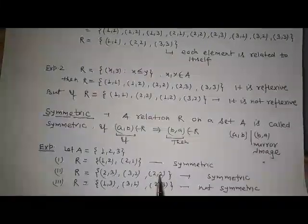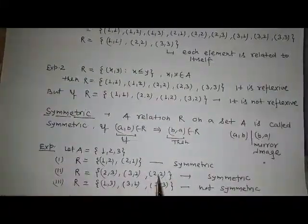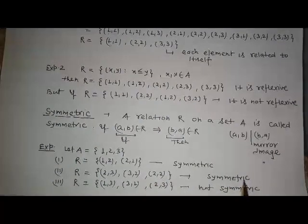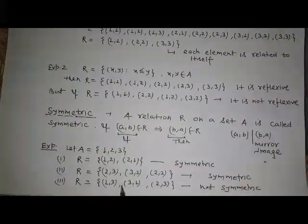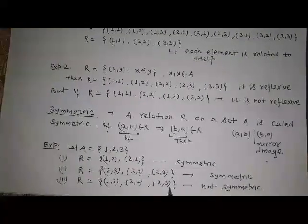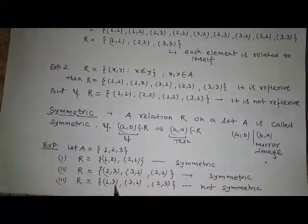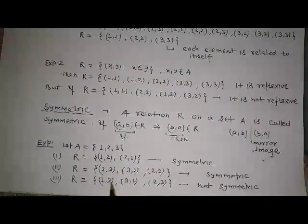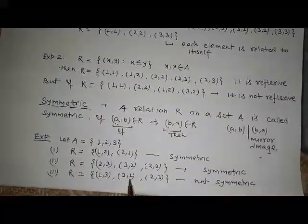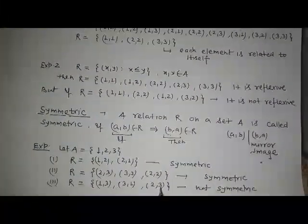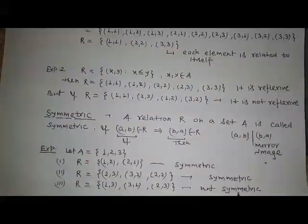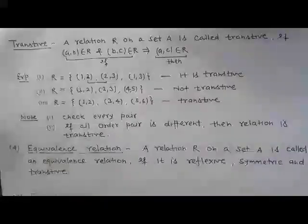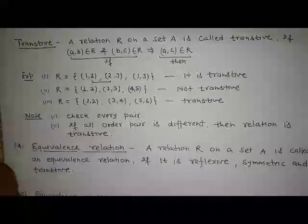2 is here and the image of 2 is also 2, that's why it is symmetric in the third relation. 1 3 comma 3 1 comma 2 3: the image of 1 3 is 3 1, and the image of 2 3 is 3 2, but 3 2 is not present here — that's why it is not symmetric.